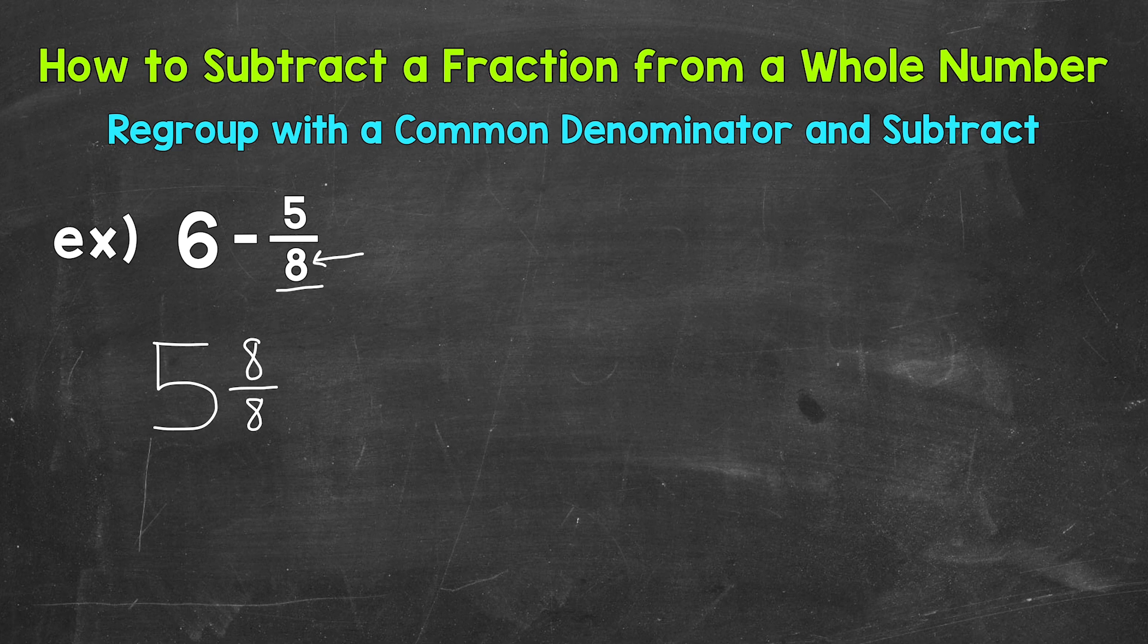So 5 and 8 eighths is equivalent to 6. This is the same thing as 5 plus 1 whole, because this 8 eighths is 1 whole. And we know 5 plus 1 is 6. So we're not changing the value of that 6 or problem at all when we regroup or change that whole number to a mixed number.